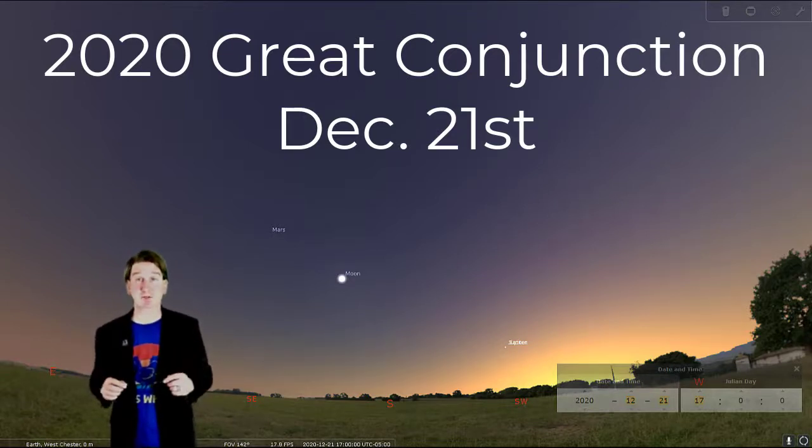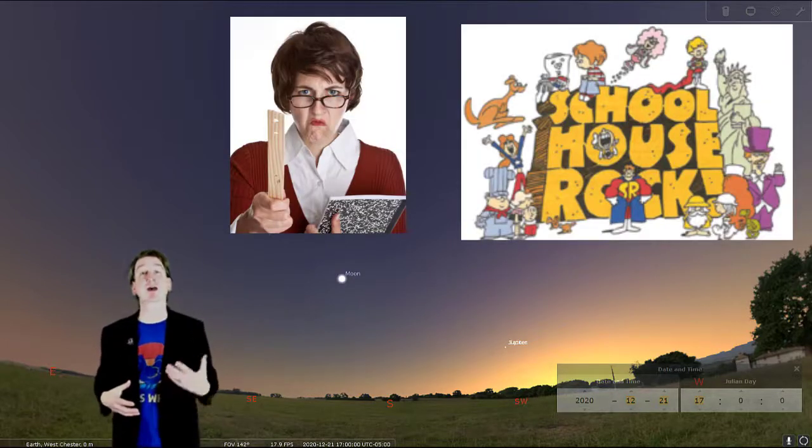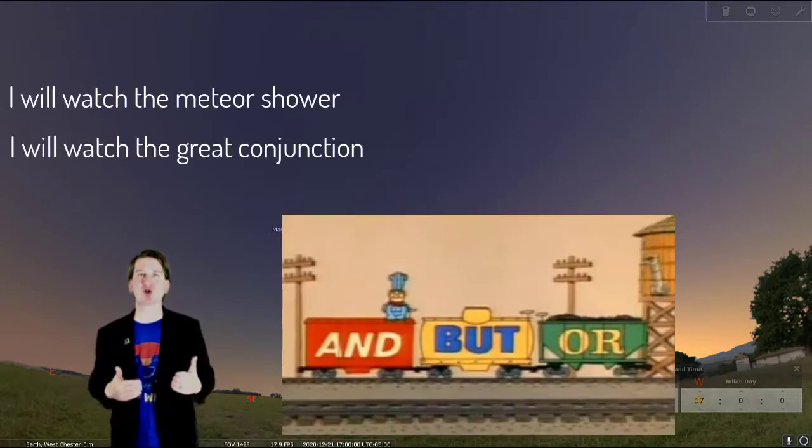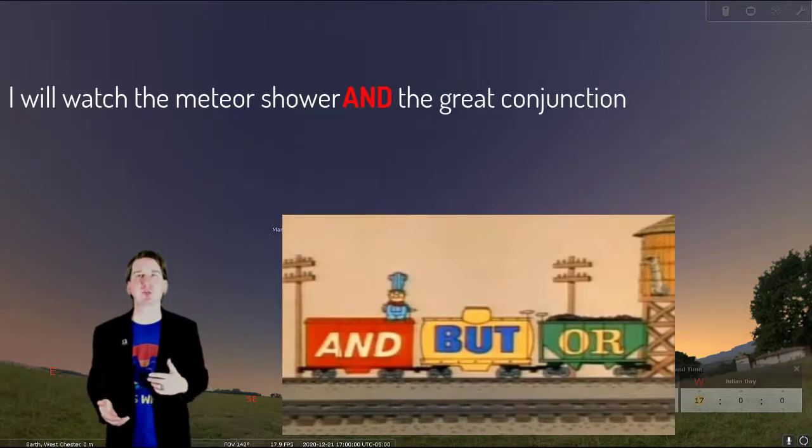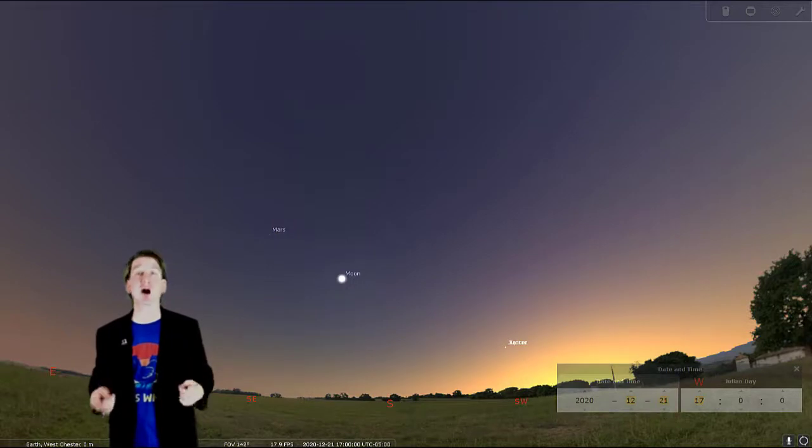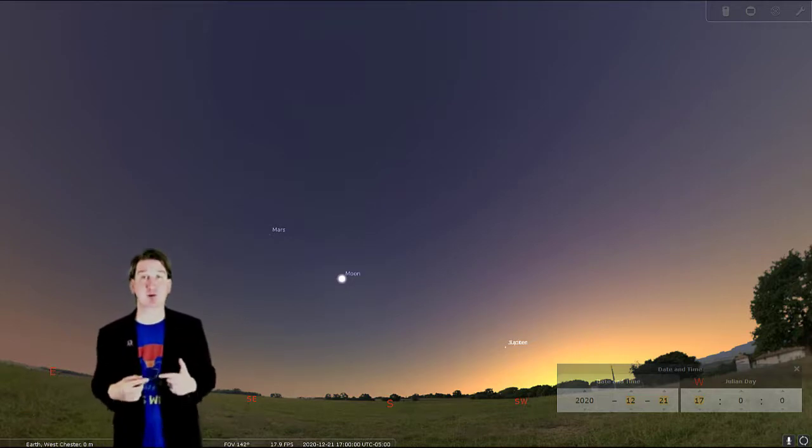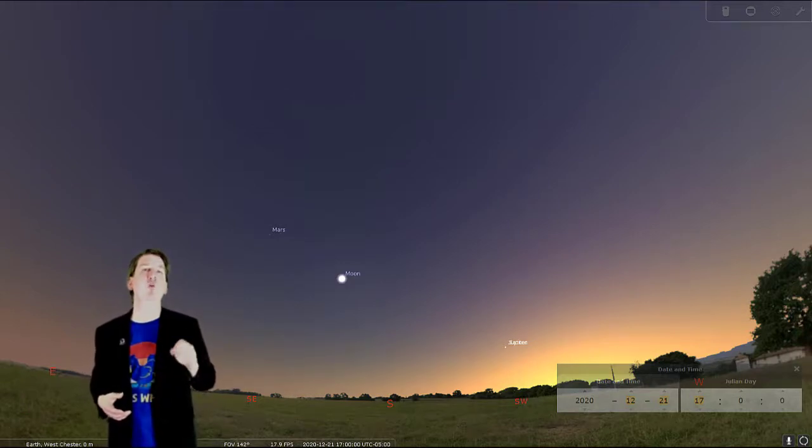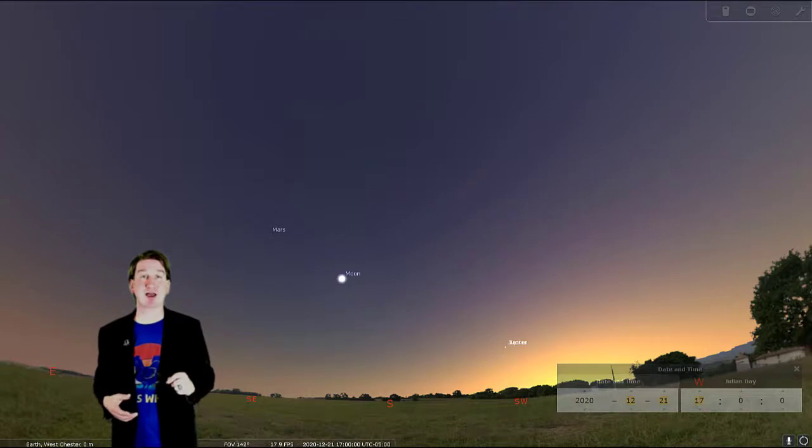The word conjunction actually means join together in Latin. If you remember from English class or Schoolhouse Rock, conjunctions such as and, but, or join together words, clauses, or phrases. In astronomy, we use the term conjunction when two objects such as planets or the moon appear to join together or pass close by other planets, the moon, or stars in the sky. Regular conjunctions happen quite often, but go unnoticed by most people. When the two bright, giant planets in our sky pass by each other, it's called a great conjunction.